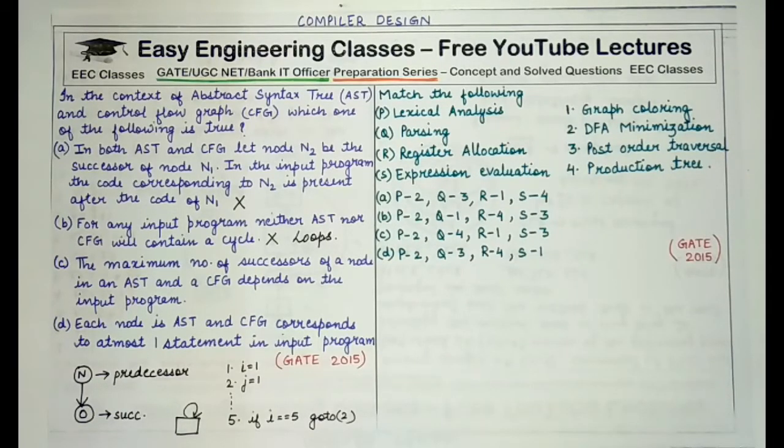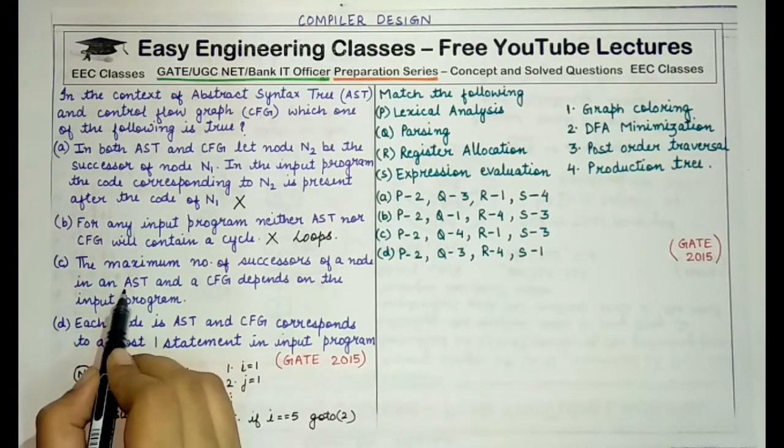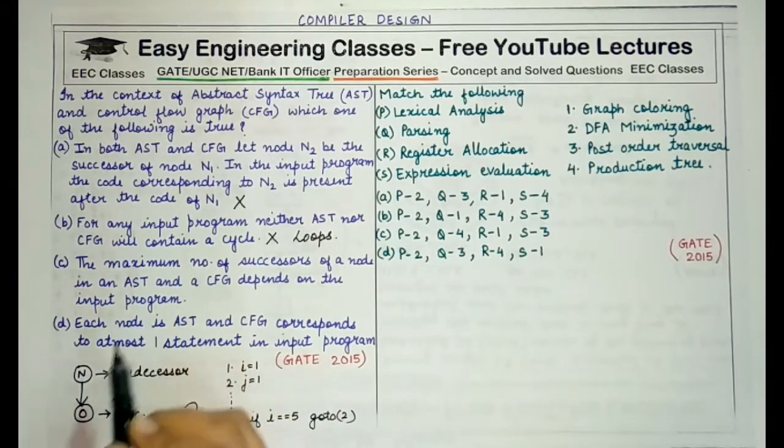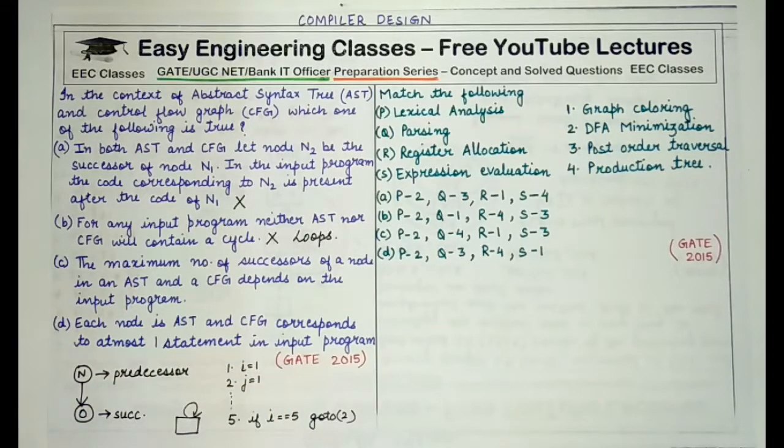Coming to the third statement: the maximum number of successors of a node in an abstract syntax tree, that is AST, and control flow graph depend on the input program. Definitely this is correct because whatever be the input of a program, whatever is the input program, the number of successors that a particular node can have in its abstract syntax tree as well as in control flow graph, it depends only on the program. So a node can have a different number or more number of successors if a different input program is given to it.